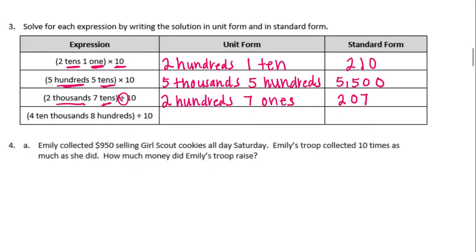Four ten-thousands and eight hundreds, again divided by ten — making it one place value smaller. One place value smaller than ten thousands is thousands, and eight hundreds becomes tens. So we have four thousands and eight tens — four thousand, nothing in the hundreds place, eight in the tens place, nothing in the ones place: four thousand eighty.